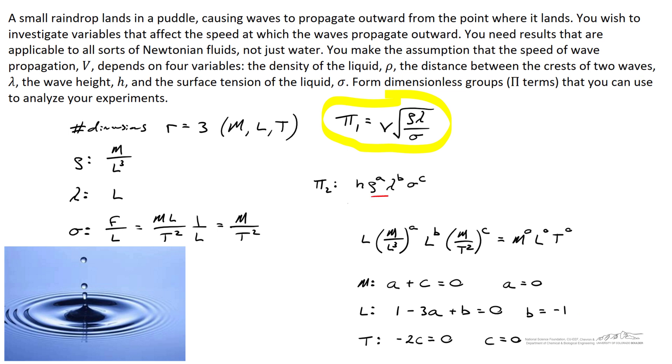Let's proceed with the second pi term. Again we've got the same repeating variables. We'll set up a system of three equations, three unknowns, for mass, length, and time. What we find are both a and c are equal to zero, and a value of b is equal to negative one. This means that pi two is equal to the height multiplied by the wavelength to the negative one power, or we look at it this way, it's equal to h over lambda.